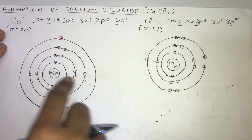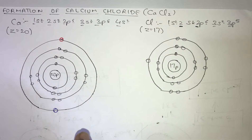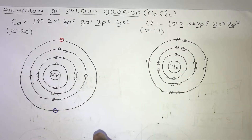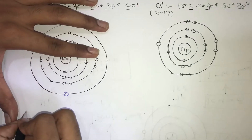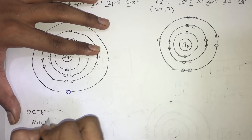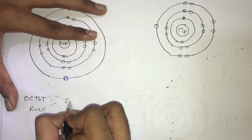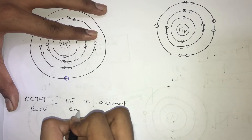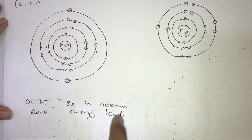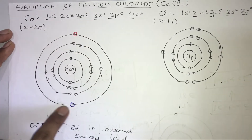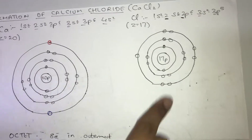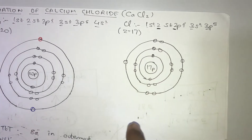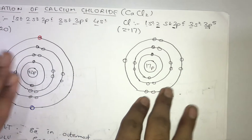Now, are this calcium atom and chlorine atom stable? The answer is obviously no — both are unstable. Why are they unstable? Because according to the octet rule, we must have 8 electrons in the outermost energy level. If you observe the calcium atom, it has only 2 electrons in the outermost energy level, and the chlorine atom has 7 electrons in the outermost energy level.